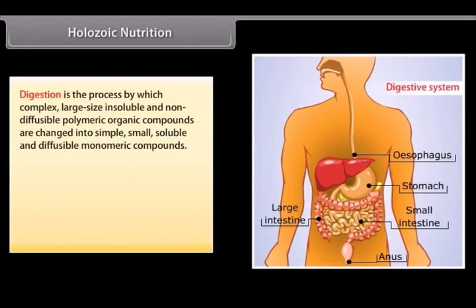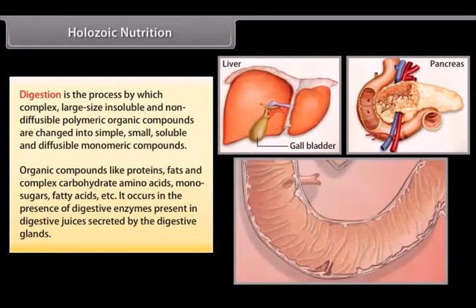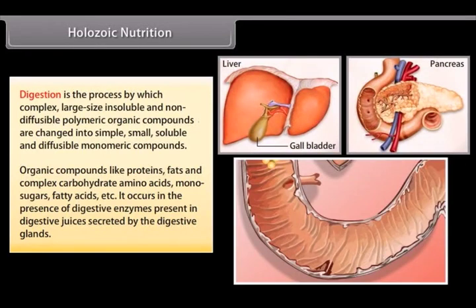Digestion is the process by which complex, large-size, insoluble and non-diffusible polymeric organic compounds are changed into simple, small, soluble and diffusible monomeric compounds — for example, organic compounds like proteins, fats and complex carbohydrates are broken down into amino acids, monosugars and fatty acids. It occurs in the presence of digestive enzymes present in digestive juices secreted by the digestive glands.